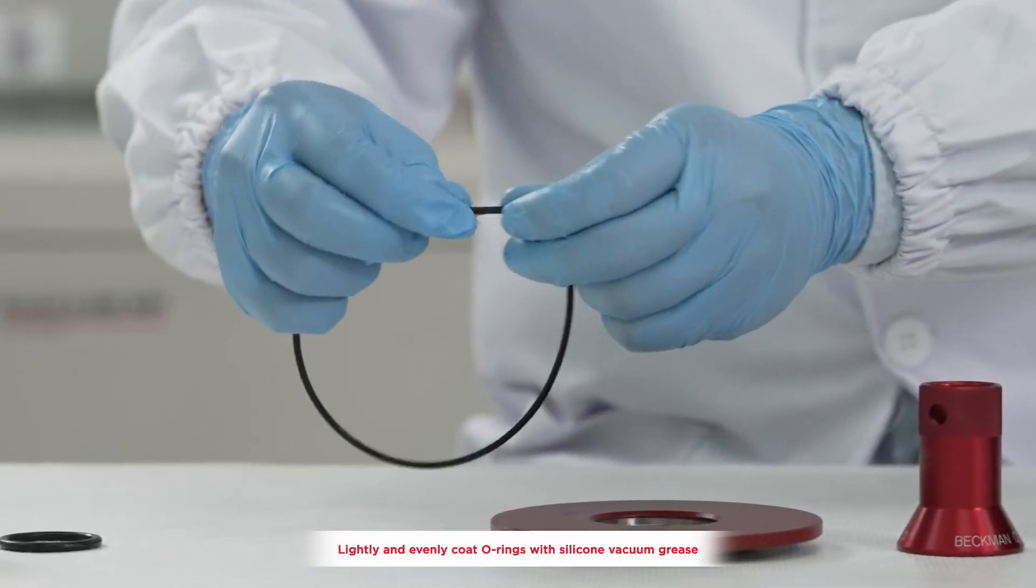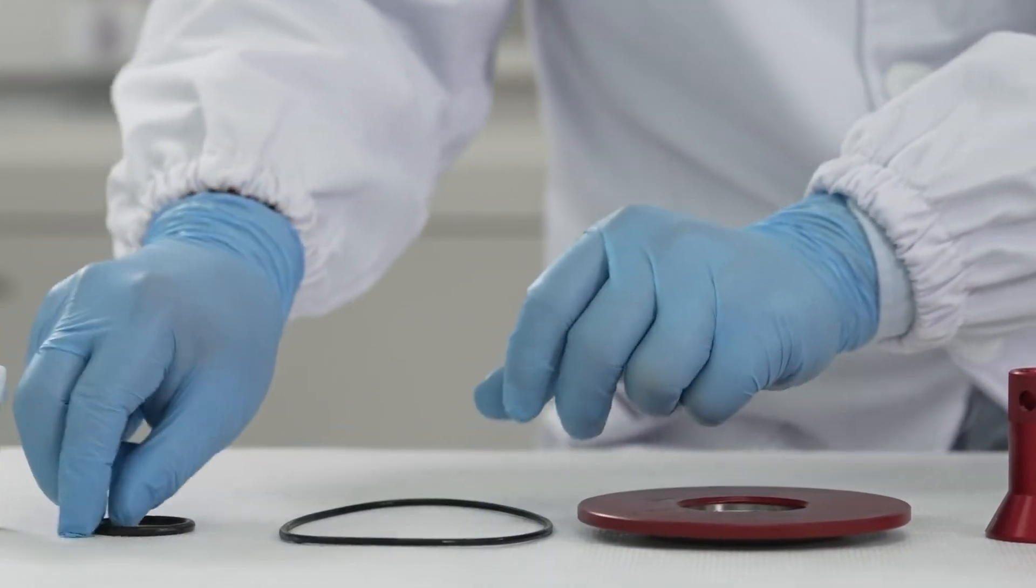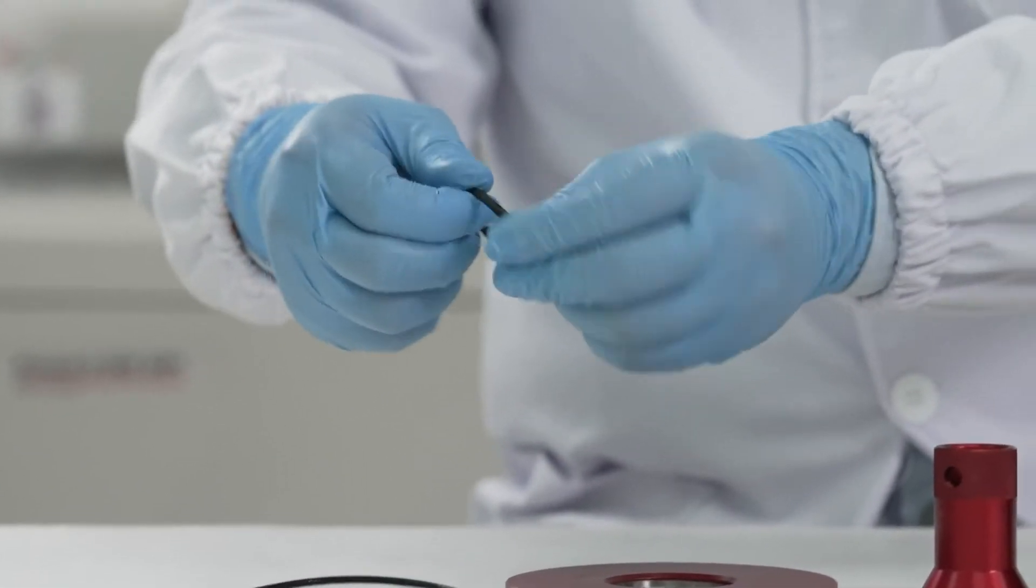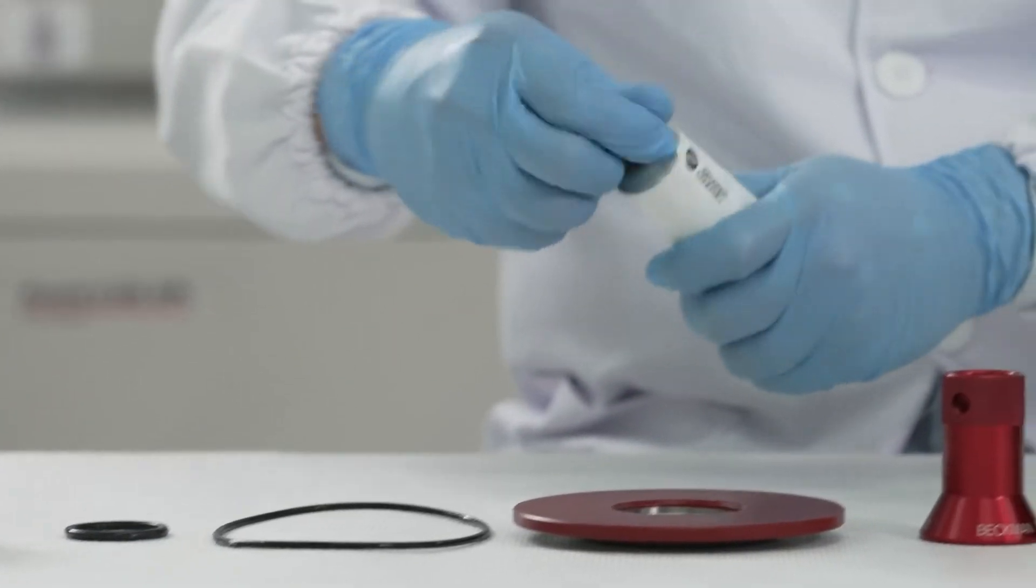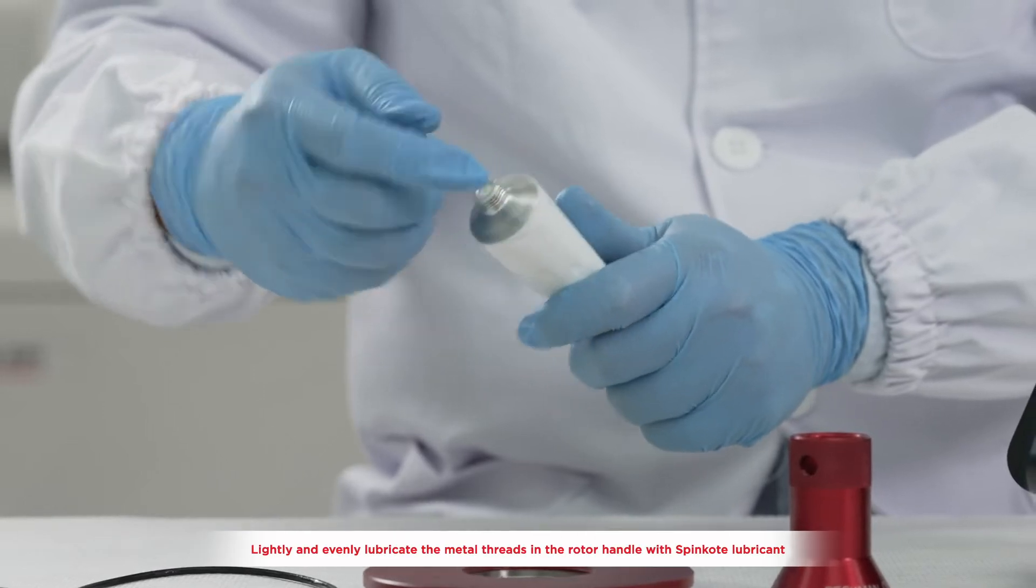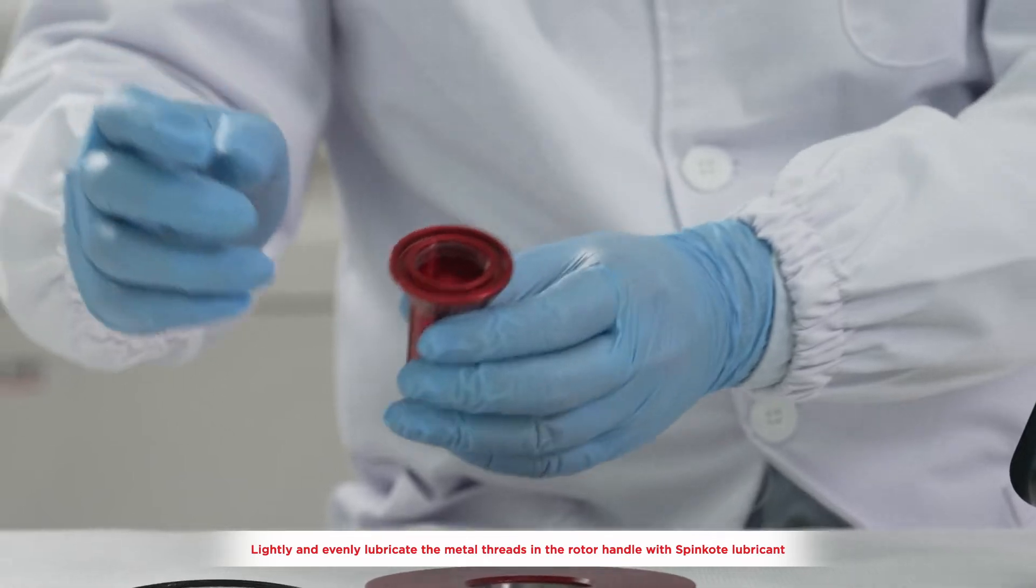Lightly and evenly coat o-rings with silicone vacuum grease. Then lightly and evenly lubricate the metal threads in the rotor handle with spin coat lubricant.